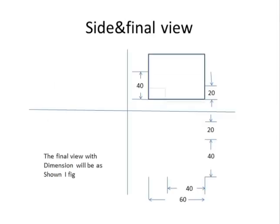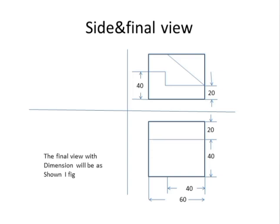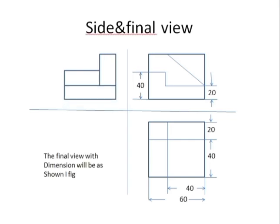This is the front view, this is the top view, and the side view will be as shown in the figure. The final view with dimensions will be as shown in the figure — that is how you draw the orthographic projection.